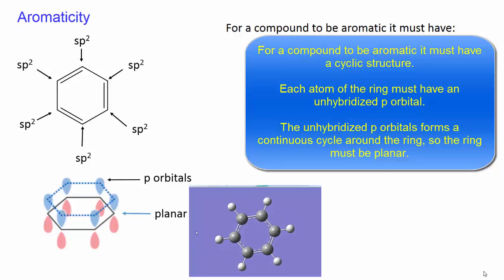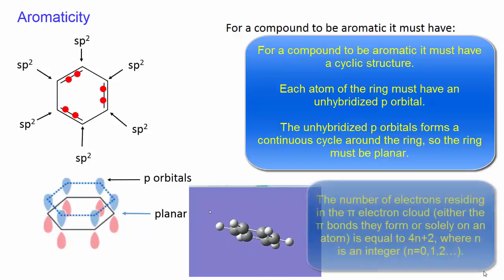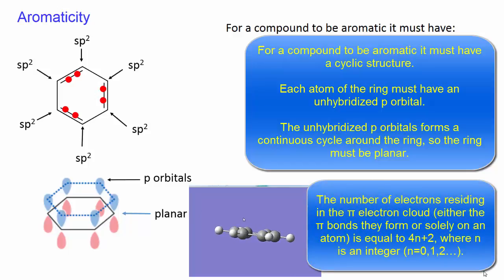The number of electrons residing in the pi electron cloud, either the pi bonds they form or solely on an atom, is equal to 4n plus 2, where n is an integer.